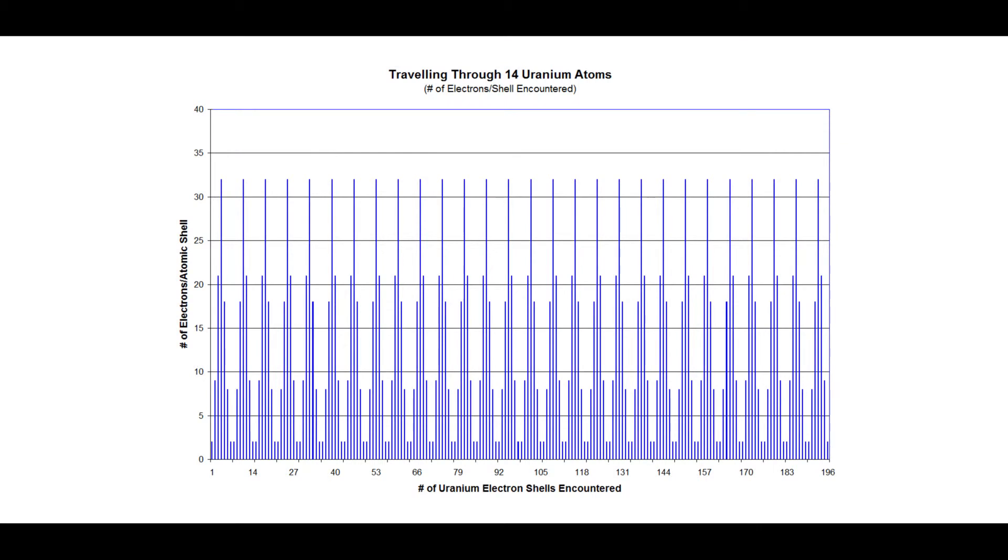For uranium, the number of electrons grouped per distance from the uranium nucleus is 2, 8, 18, 32, 21, 9, and 2 for a total of 92 electrons for one uranium atom.